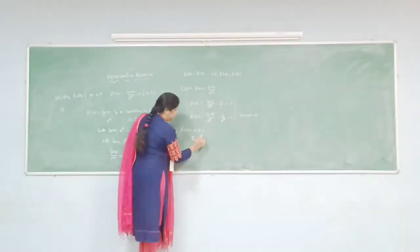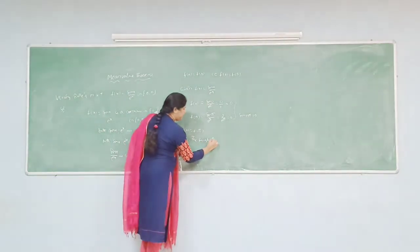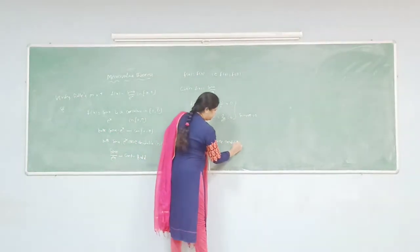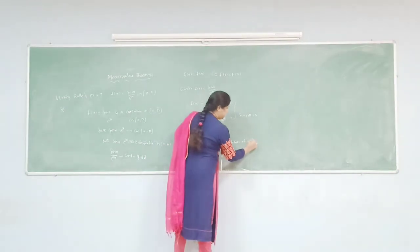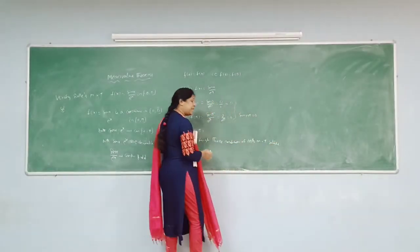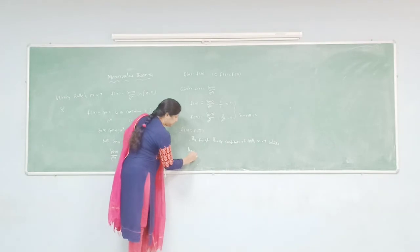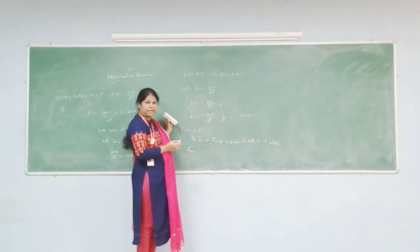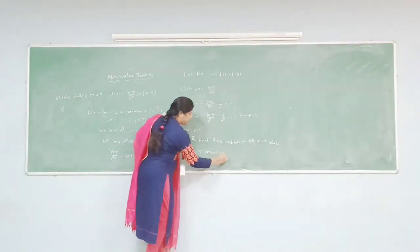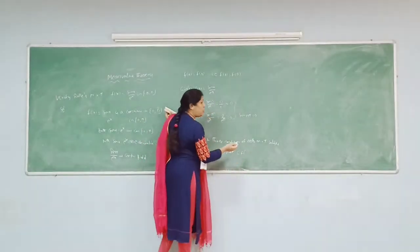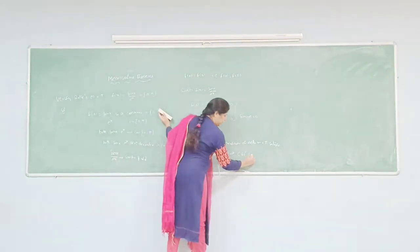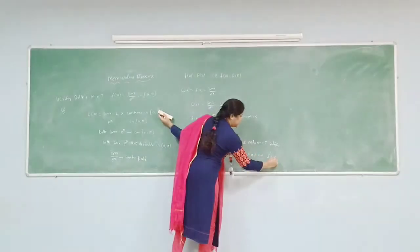Therefore all three conditions of Rolle's mean value theorem are satisfied. Then there exists at least one point c that belongs to the open interval (0, π) such that f'(c) = 0.